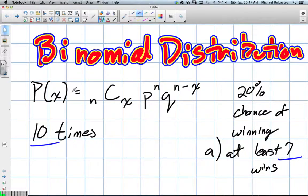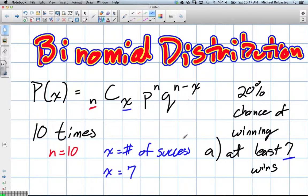Now, our n here, in this case, because we're going to play the game 10 times, n will be 10. X stands for our number of successes. Well, in this case, we're talking about 7. So X will be 7 in this case.